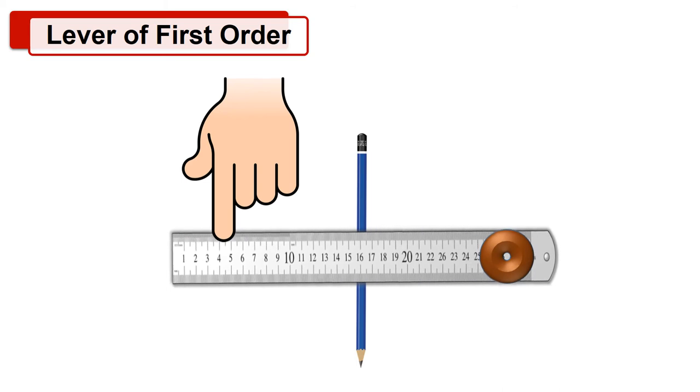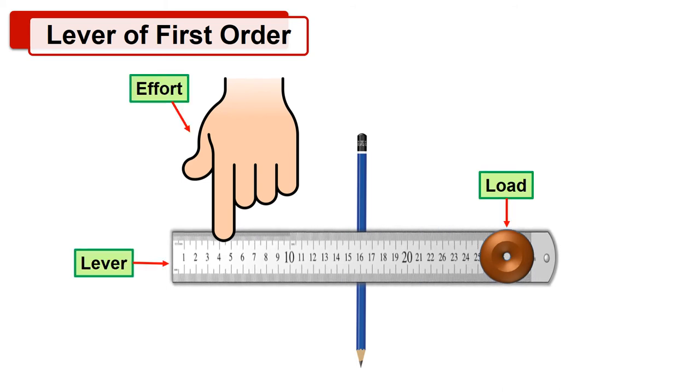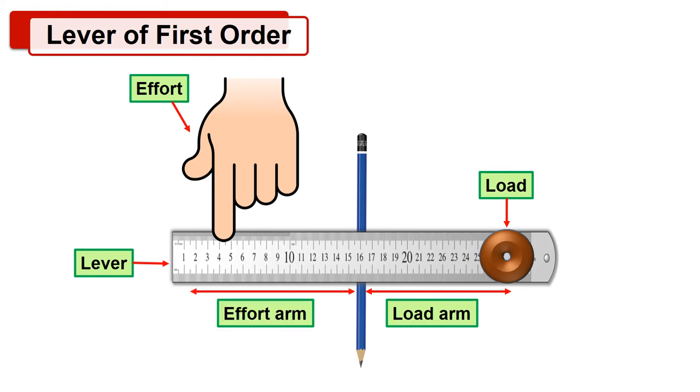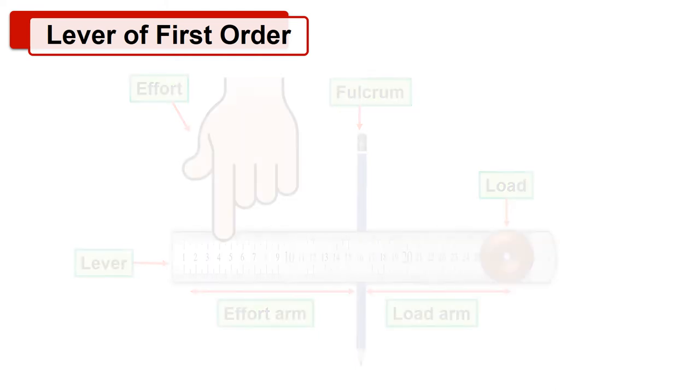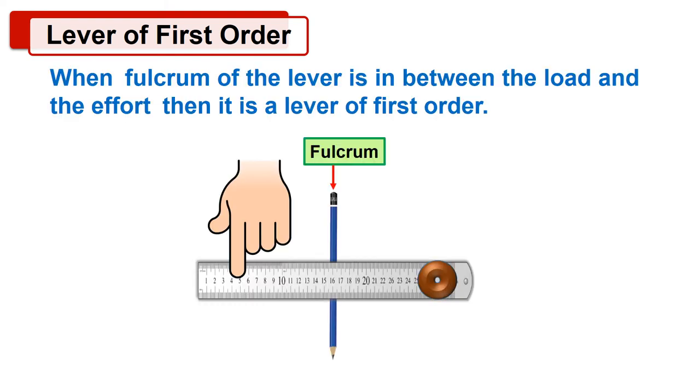Now can you tell me which are the load arm, the effort arm, and the fulcrum of this lever? Here you can see the distance between paper weight to the pencil is load arm. The distance between pencil to hand is effort arm, and pencil is the fulcrum of the lever. From this we can say that when fulcrum of the lever is in between the load and the effort, then it is a lever of first order.